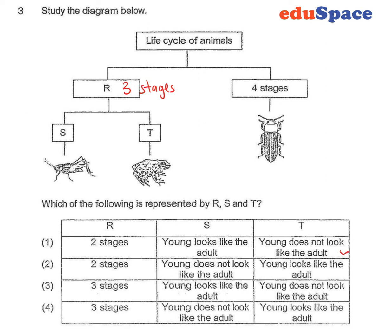This is true for T. However, for S, the young of the grasshopper looks like the adult. But it's not two stages, it's actually three. So in this case, the answer should be number three.